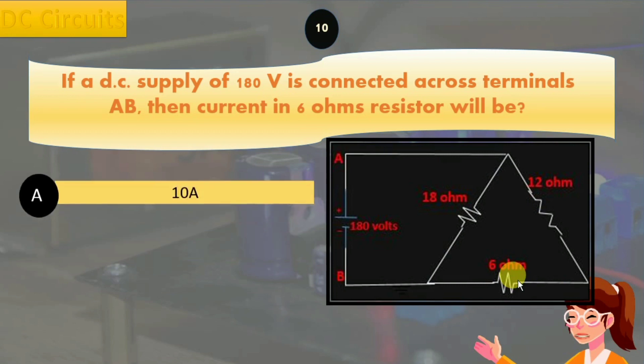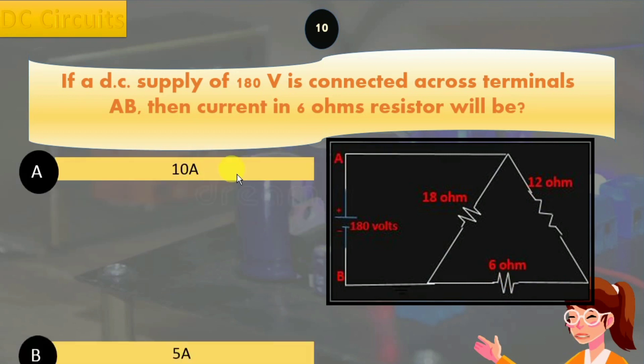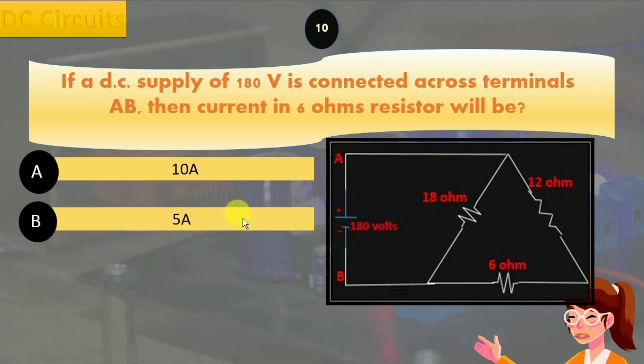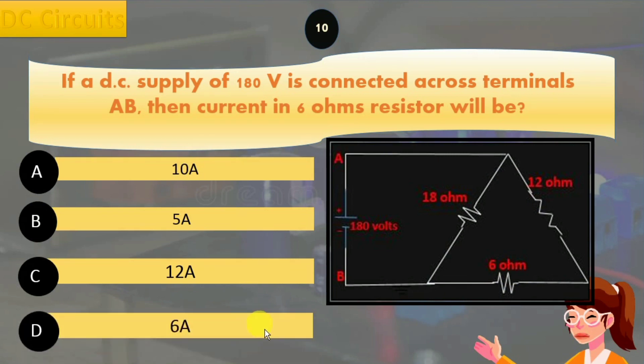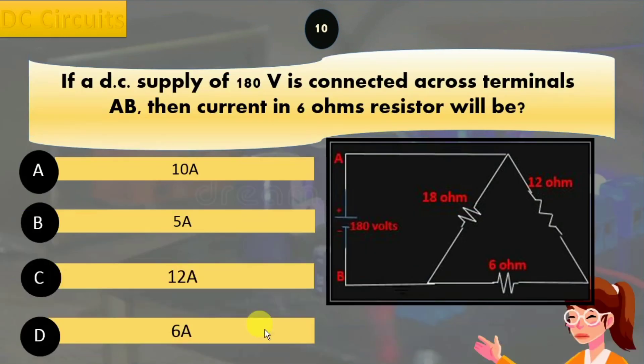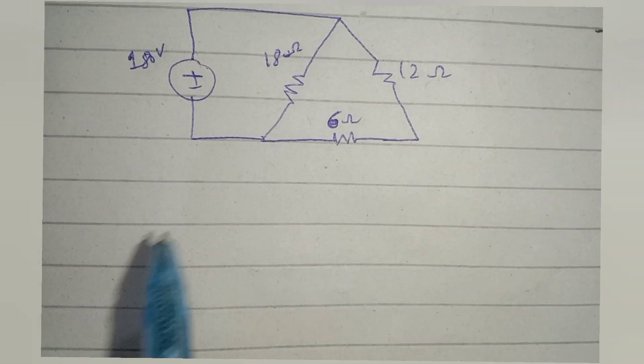The options are: option A, 10 amperes; option B, 5 amperes; option C, 12 amperes; and option D, 6 amperes.